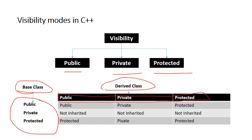In a base class, members can be public, private, or protected. If a member is declared private in the base class, it will not be inherited — not in public, private, or protected inheritance. If declared protected in base class, it will be treated as protected.